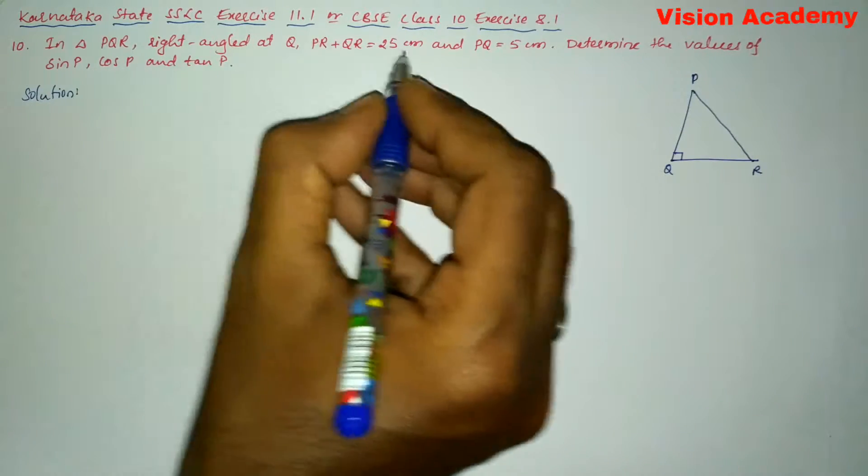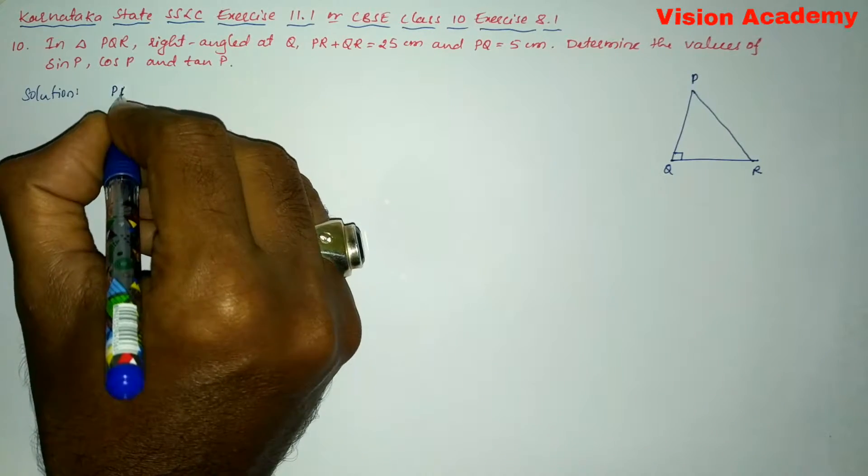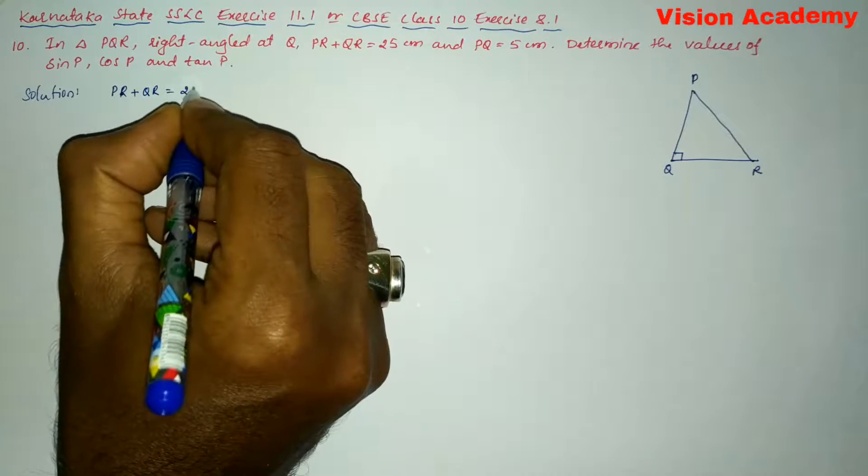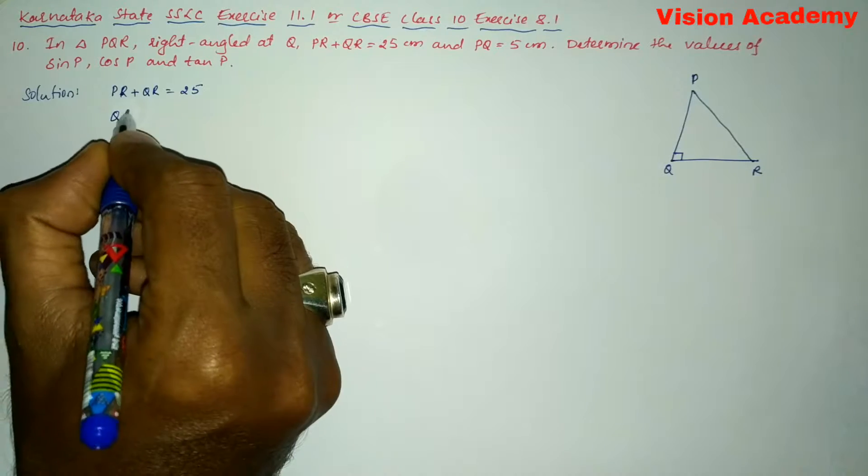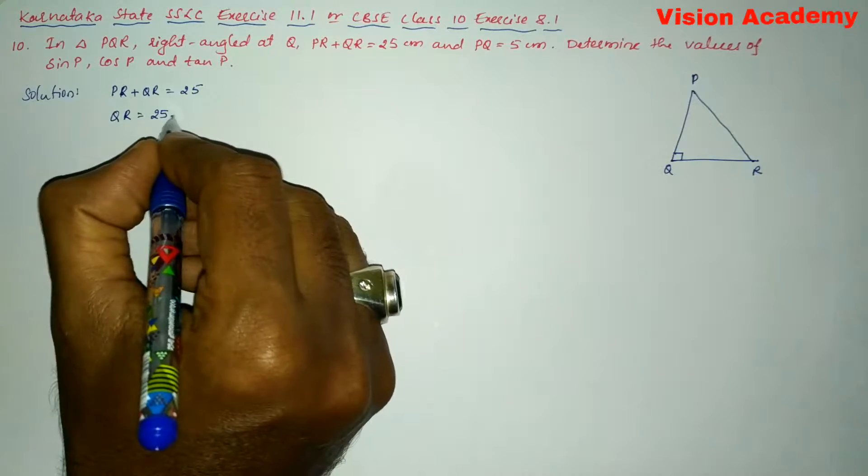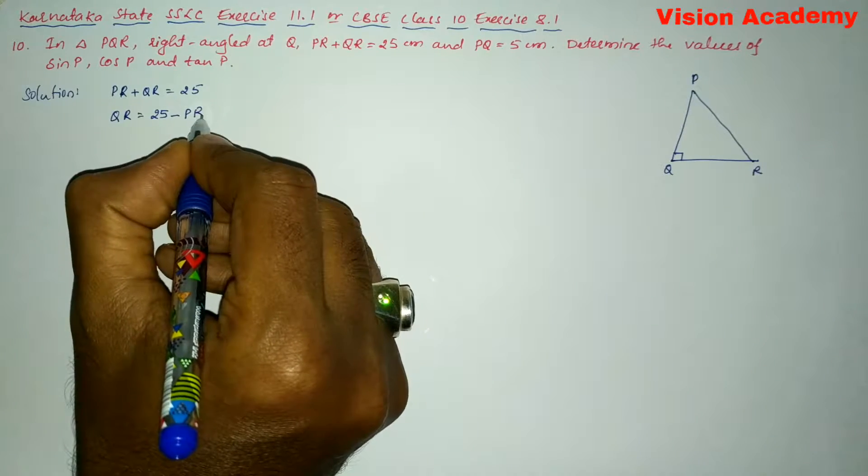Now, we are going to write the given: here it is PR plus QR is equal to 25. So therefore, if I want only QR, then I can transform this PR from LHS to RHS. It will become QR equals 25 minus PR.